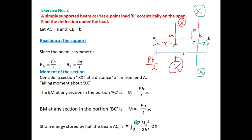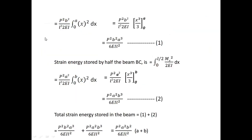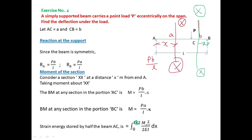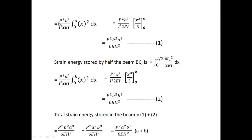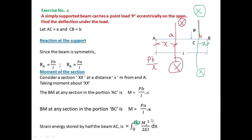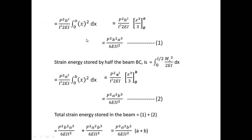This portion has limit A and this portion has limit B. The strain energy is the integral of M² divided by 2EI dx. For the AC portion: (PB/L)² divided by 2EI, integrated with x from 0 to a. Integrating x squared gives x cubed by 3, with limit 0 to a.